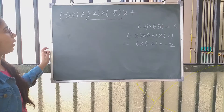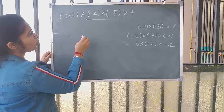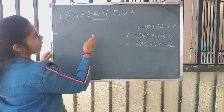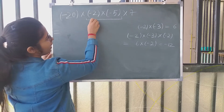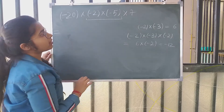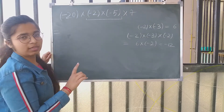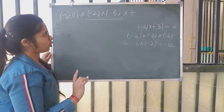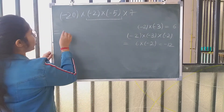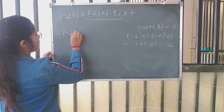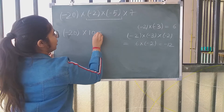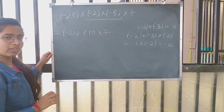Now, moving forward to the question: minus 20, minus 2, minus 5, and 7. I can always group numbers and then multiply. Let's first group minus 2 and minus 5 together. Minus into minus is plus, so that's positive, and 2 into 5 is 10. So what I get is minus 20 into 10 into 7.